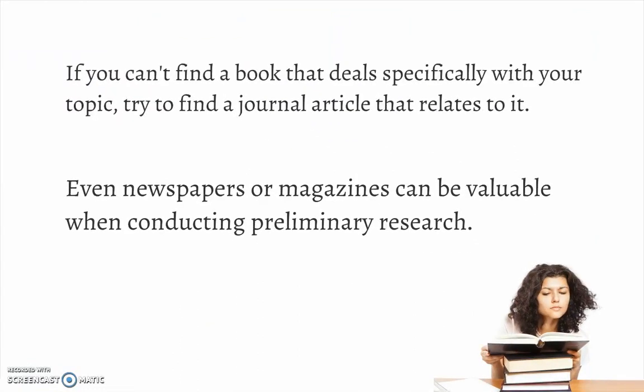If you can't find a book that deals specifically with your topic, try to find a journal article that relates to it. Journal articles will usually outline the argument on the first page — read the abstract to see if the article will be of use to you. Even newspapers or magazines can be valuable when conducting preliminary research. Of course, it is also useful to look through your lecture notes. Your instructor may even have provided a list of outside or suggested readings, which can be useful if they are related to the topic you have chosen to write about.